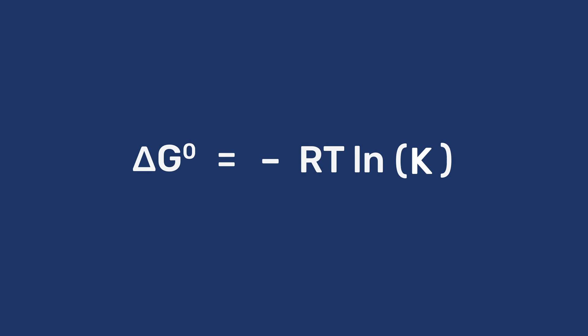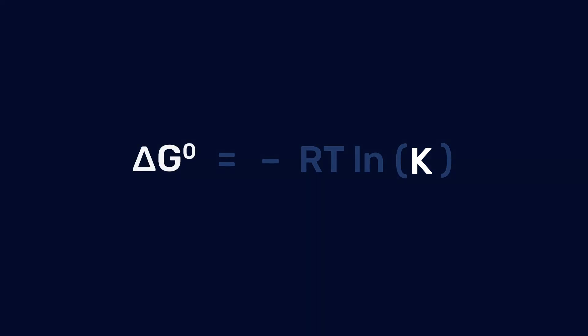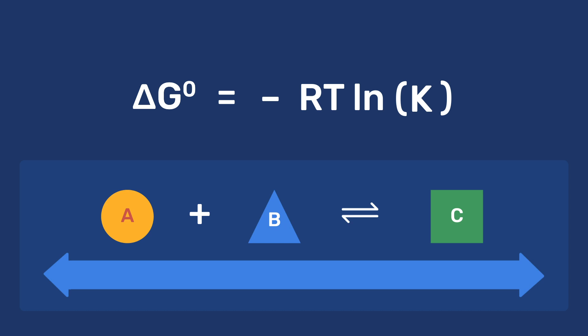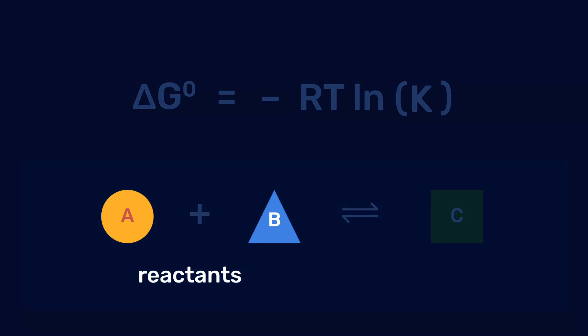The value of the equilibrium constant, or that of ΔG0, tells us in which direction a reaction would go if all reactants and products were initially having an activity of 1.